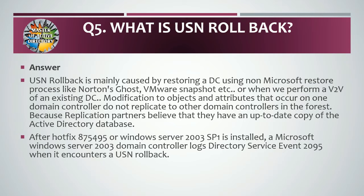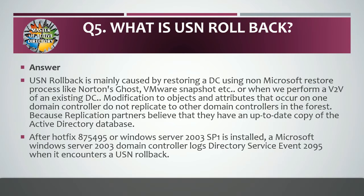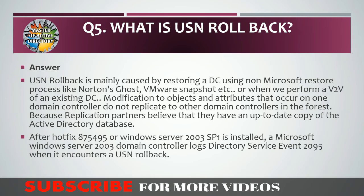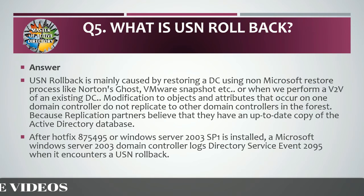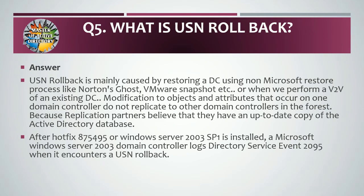Answer: USN rollback is mainly caused by restoring a DC using a non-Microsoft restore process like Norton Ghost, VMware snapshot, etc., or when performing V2V of an existing DC. Modifications to objects and attributes that occur on one domain controller do not replicate to other domain controllers in the forest, because replication partners believe they already have an up-to-date copy of the Active Directory database.